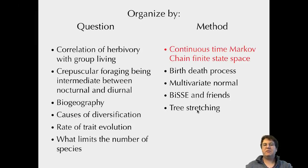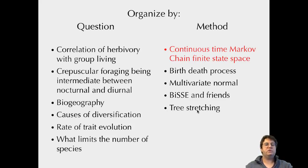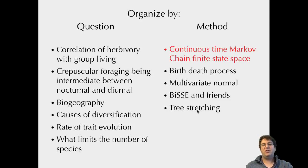The continuous-time Markov chain and finite-state space we're going to learn about today is a model used in looking at DNA evolution to infer trees. It's used to figure out ancestral states and correlations between states — so it's actually used for a lot of different questions. Once you understand this basic method, you can apply it to different questions.